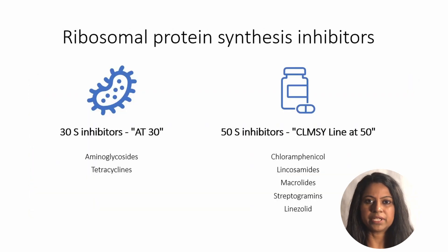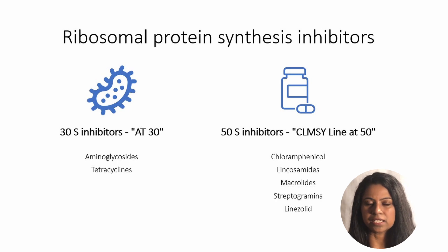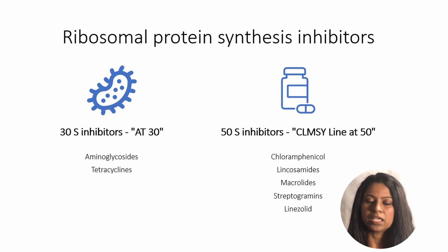Antibiotics that inhibit bacterial protein synthesis are grouped as 30S ribosomal subunit inhibitors and 50S ribosomal subunit inhibitors. Aminoglycosides and tetracyclines act on the 30S ribosomal subunit, remembered by the mnemonic AT30. The antibiotics acting at the 50S ribosomal subunit are chloramphenicol, lincosamides, macrolides, streptogramins, and linezolid, remembered by the mnemonic 'CLUMSY LINE at 50'.